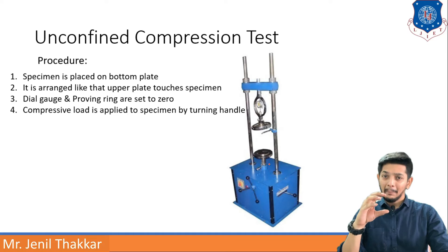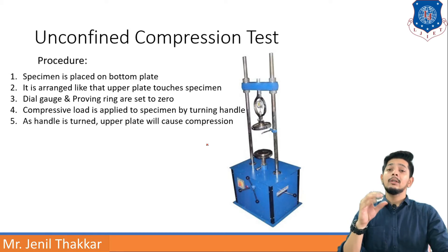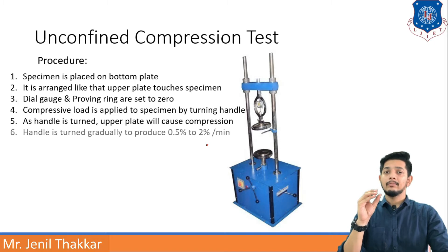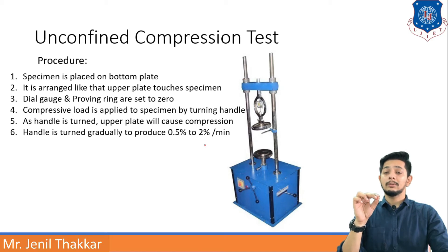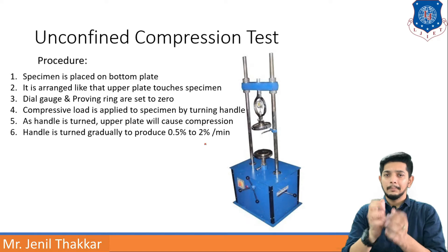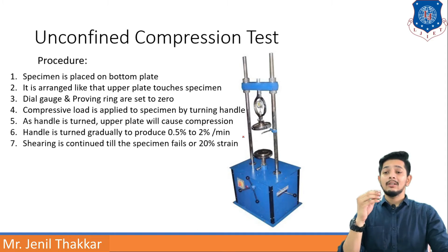As the handle is turned, the upper plate causes compression and the specimen will gradually get smaller in size. The handle is turned gradually to produce 0.5 percent to 2 percent per minute strain — it is a very minimal amount. Do not turn the handle quickly; it must be a gradual movement. Shearing is continued until the specimen fails or reaches 20 percent strain.